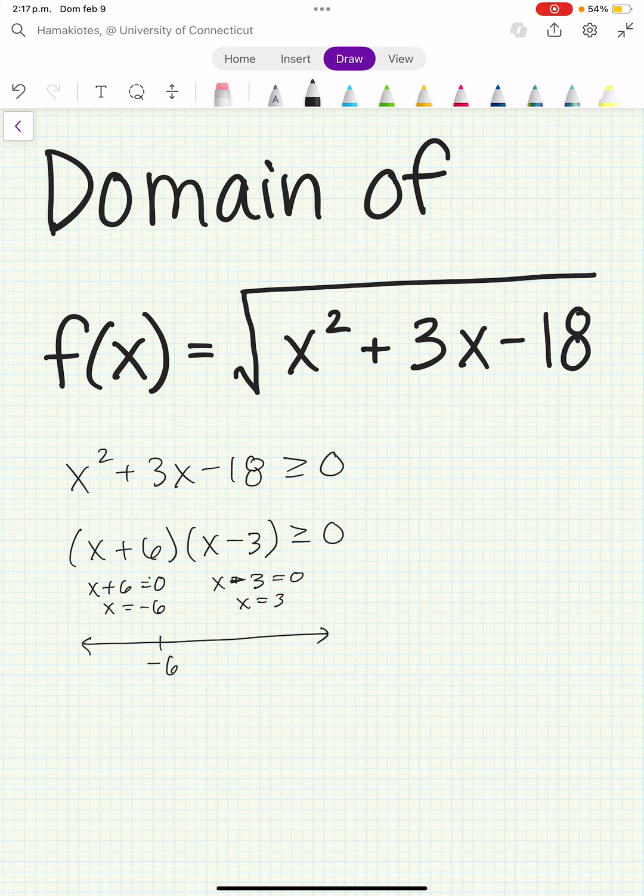So we can mark down minus 6 and 3, and these are included in our interval. Now we want to check in these intervals if x squared plus 3x minus 18 is positive or negative.